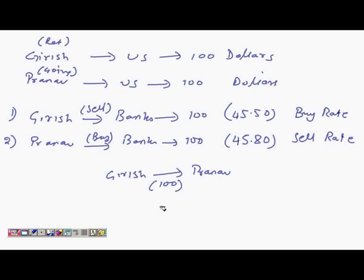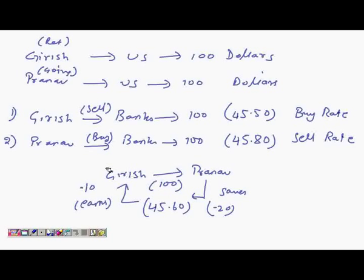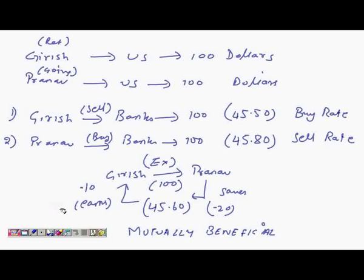Girish is willing to sell at 45.60, so it's mutually beneficial. Girish makes 0.10 and Pranav saves 0.20. What they have basically done is they have swapped the currency between the two of them — they have exchanged. This in very simple terms is the concept of a swap, and the most important thing is that it is mutually beneficial for both parties. This is where the whole concept of swap lies — whenever it is beneficial to exchange things, you generally enter into a swap.